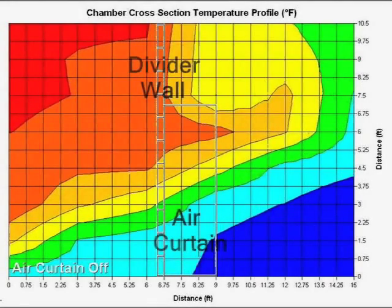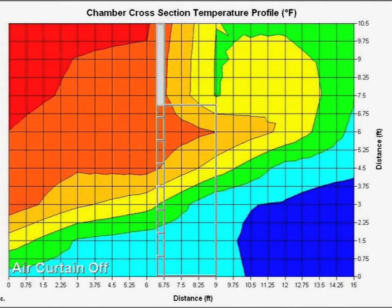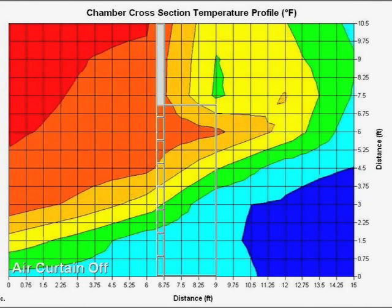This time-lapsed video shows the chamber cross-section temperature profile between a cold and warm room. The cold side is on the right and the hot side is on the left.